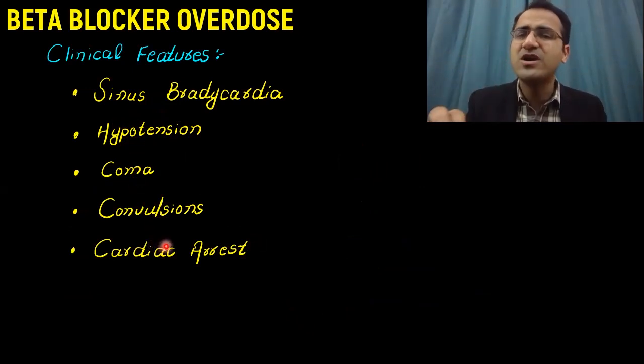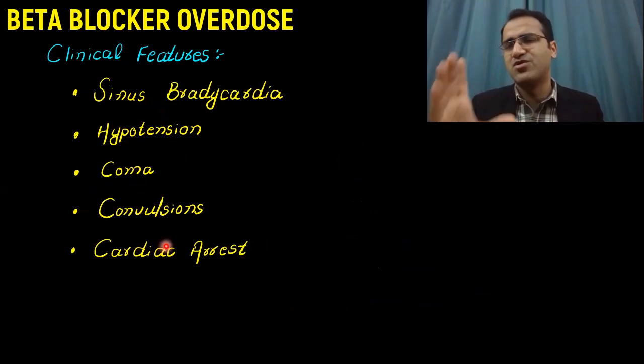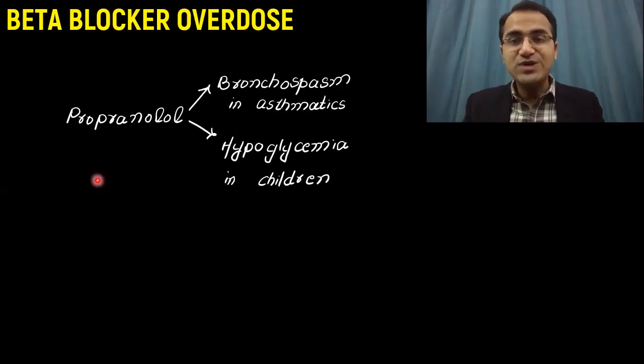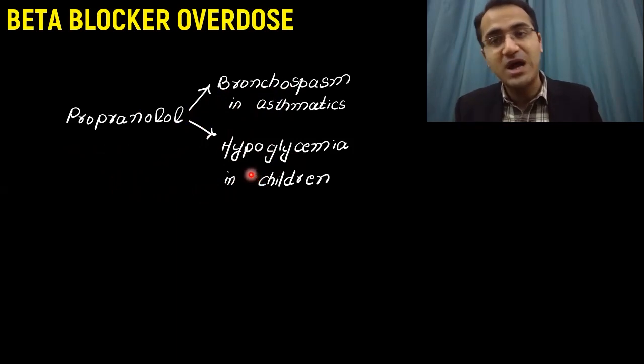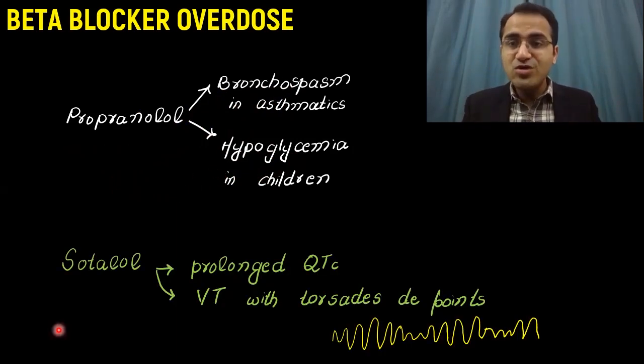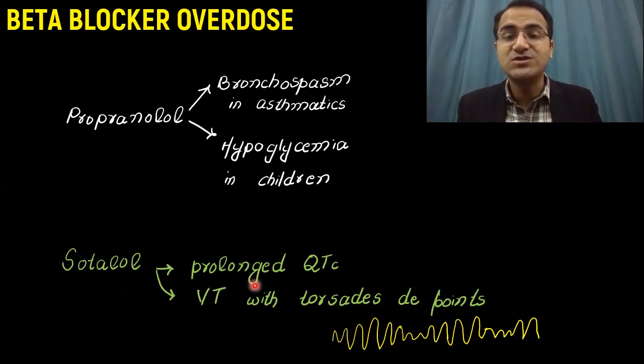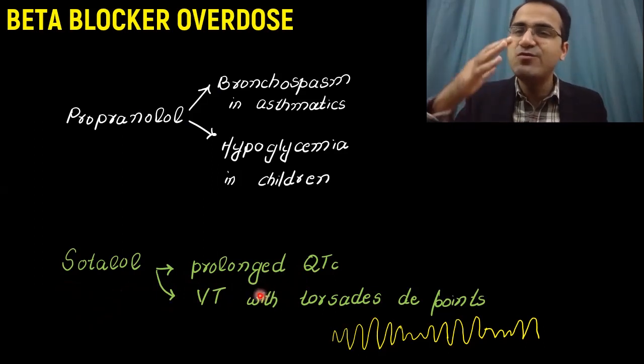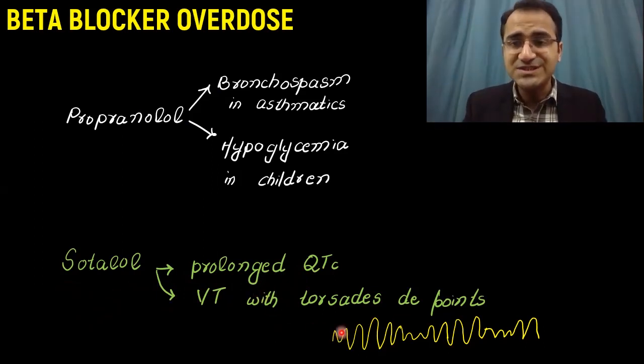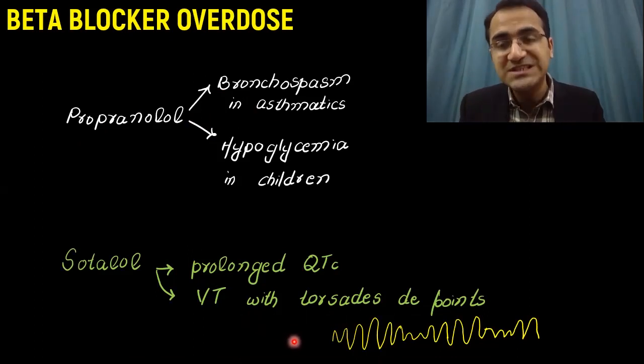The effects of beta blocker on the heart are the most important ones. Coming to the effects of propranolol, they have pronounced effects in asthmatics where they cause bronchospasm, and in children you would see prominent hypoglycemia. Sotalol is an anti-arrhythmic beta blocker that is used to control arrhythmia, but it can also cause arrhythmia. It can cause prolonged QT interval with ventricular tachycardia and even torsades de pointes. This is how torsades de pointes looks on ECG.